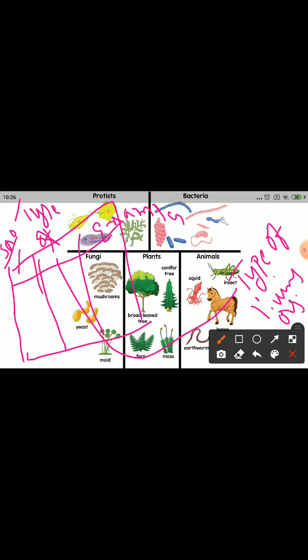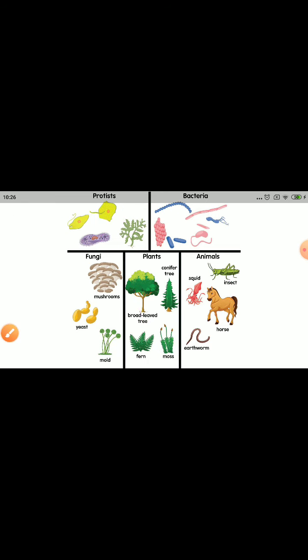So the first column is serial number, the second is type of living organism, and the third is examples. We are going to complete this table by observing the given picture. The given picture divides living forms into different groups. First, let us look at the living organisms present in our surroundings which are green in color. Those living forms are your plants.